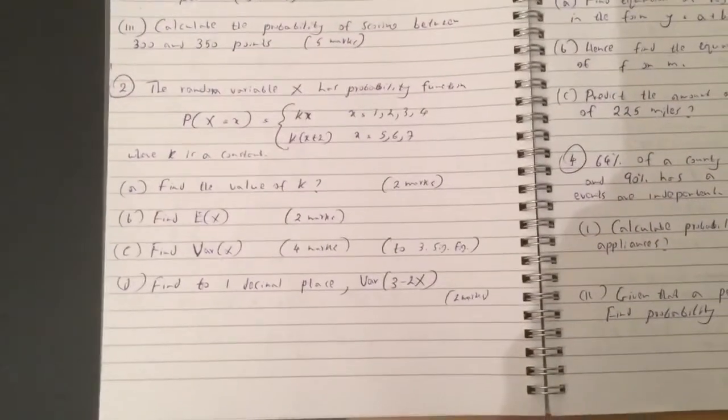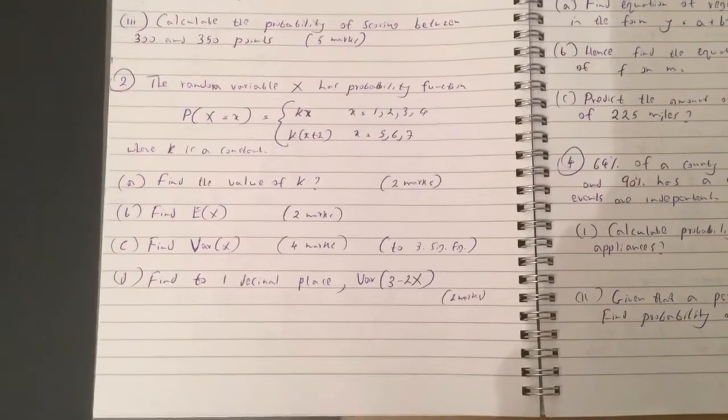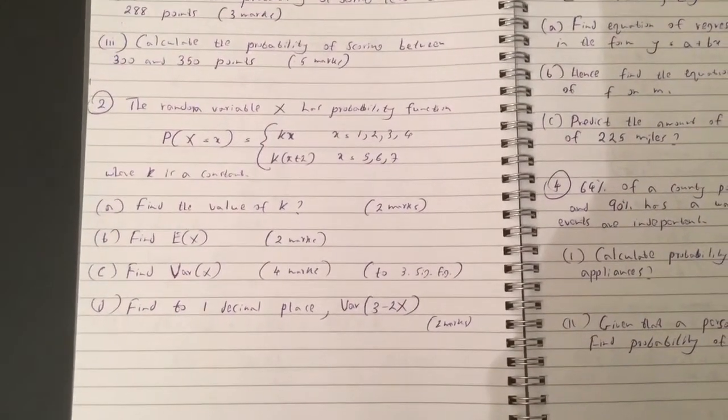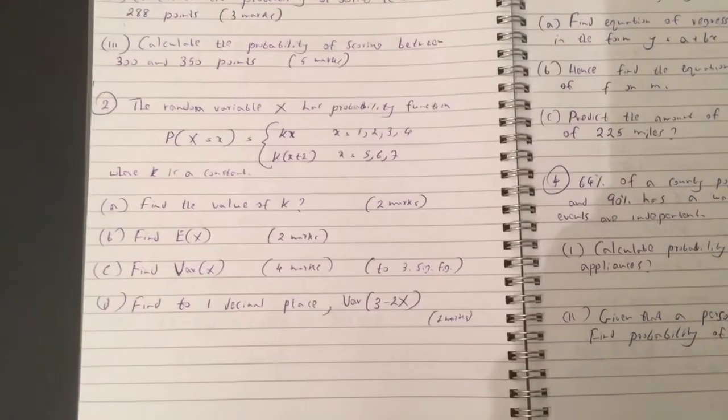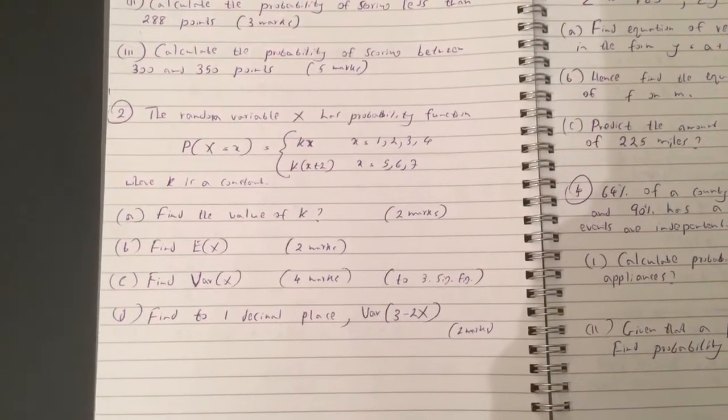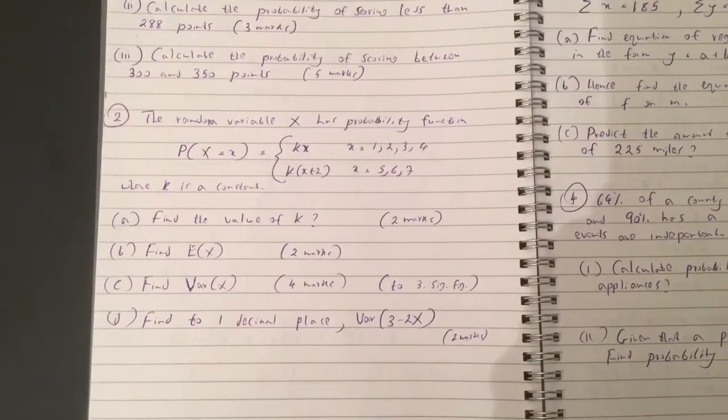Question 2. The random variable x has probability function kx for 1, 2, 3, 4 and kx plus 2 for 5, 6, 7 where k is a constant. Question A: Find the value of k.